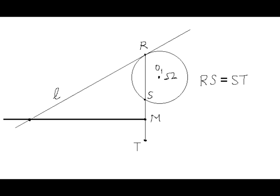Then draw the perpendicular bisector of segment ST in the direction where it crosses the straight line L that is tangent to circle omega at point R. Note that line L cannot be parallel to segment MB since chord RS is not a diameter of circle omega, and so tangent line L at point R is not perpendicular to RS.